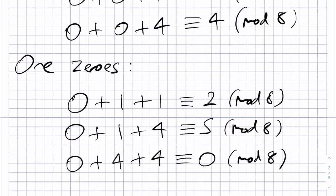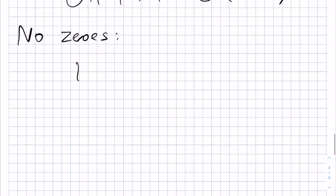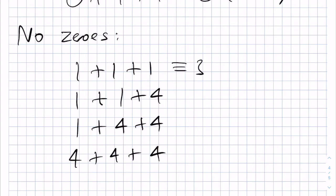The very last case to consider is the case of no 0s. In this situation, we can have 1 plus 1 plus 1, or 1 plus 1 plus 4, or 1 plus 4 plus 4, or finally 4 plus 4 plus 4. These are all of the possible cases. The first one gives us 3, the second one gives us 6, the next one gives us 9, which is 1 in modulo 8, and the last one gives us 12, which is 4 in modulo 8.